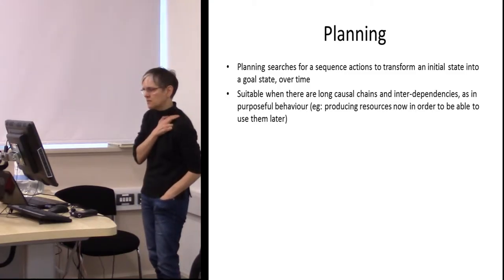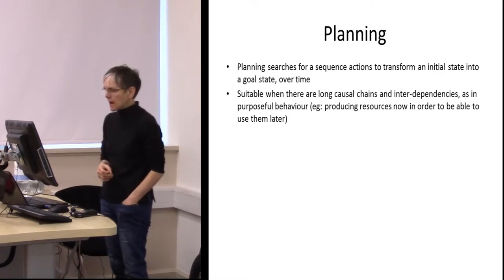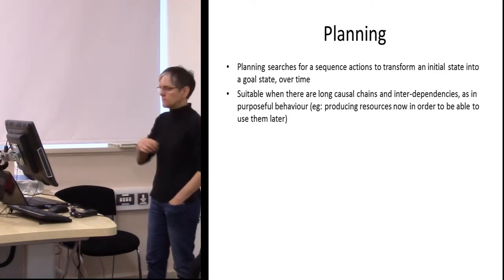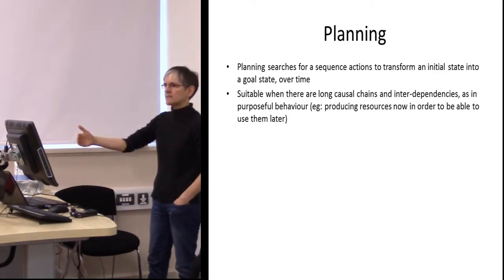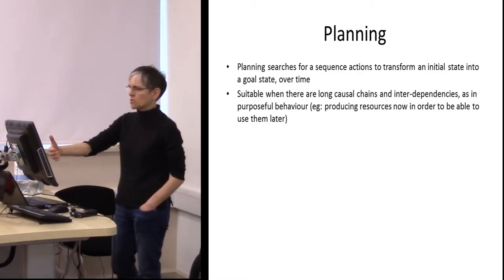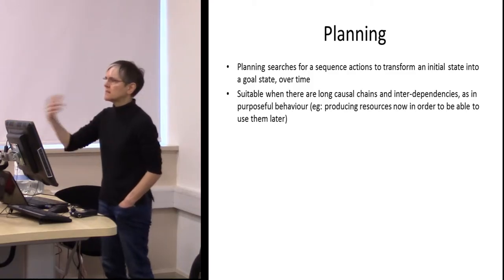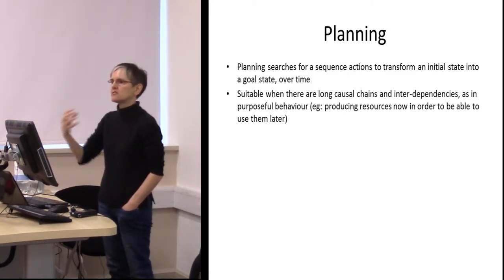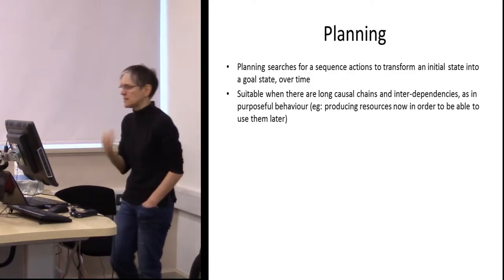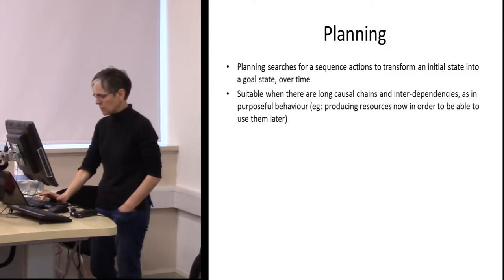Planning searches for a sequence of actions to transform an initial state into a goal state over time. It is suitable when there are long chains of causality and interdependencies — for example, when timber was felled and then much later used, we can see there was deliberate intention to produce resources for later use. These are causal interdependencies, and when we have or expect those, planning is a useful technology.